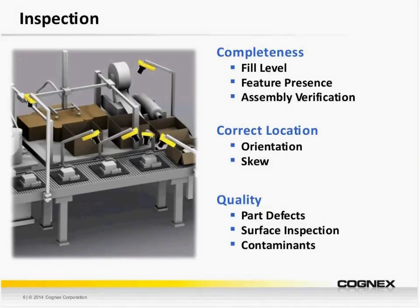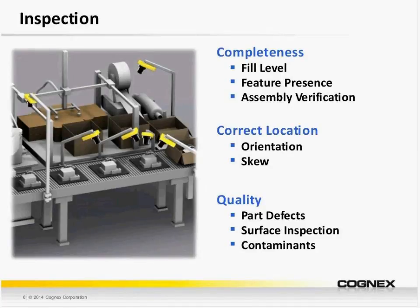With inspection, we can be inspecting for a variety of things. Part completeness — what's the fill level on a bottling line? Have all features been applied or assembled to the product, whether it's a properly printed feature on a consumer electronic device or an assembled component on an automotive part? We can inspect for correct location, correct orientation or skew. And finally, we can inspect for quality: part defects, surface inspection to ensure the formation is free of unwanted nicks and scratches, and contaminants — inspecting to ensure unwanted contaminants have not been introduced during the manufacturing process.